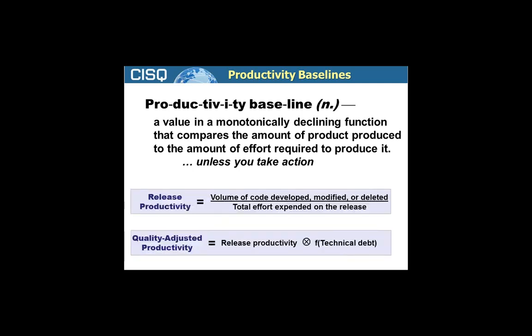We've got these two measures: release productivity and quality-adjusted productivity. It's the quality-adjusted productivity, constantly tracking that and trying to make sure that we sustain the quality of the product, that's going to allow us to keep this productivity baseline from being a declining function and hopefully keep it reasonably stable. And if we're really doing a great job, continually improving the productivity over time. But we have to control quality if we're really going to truthfully improve productivity across all the releases in the lifetime of an application.